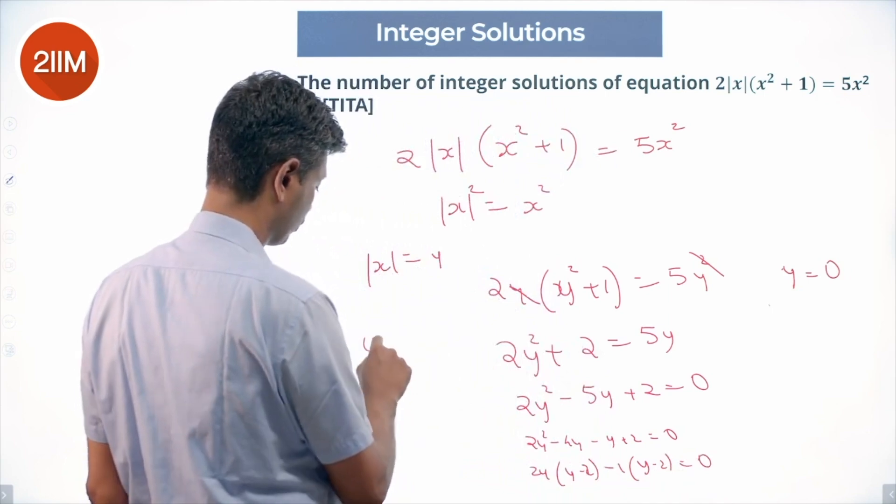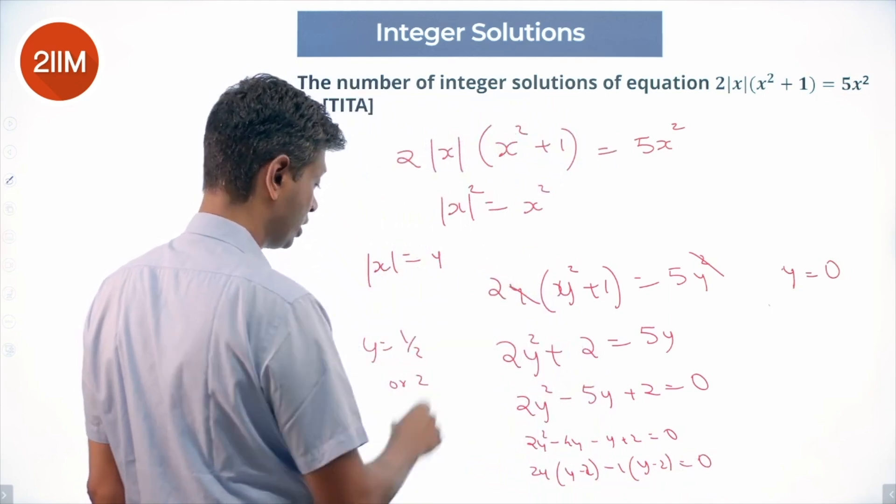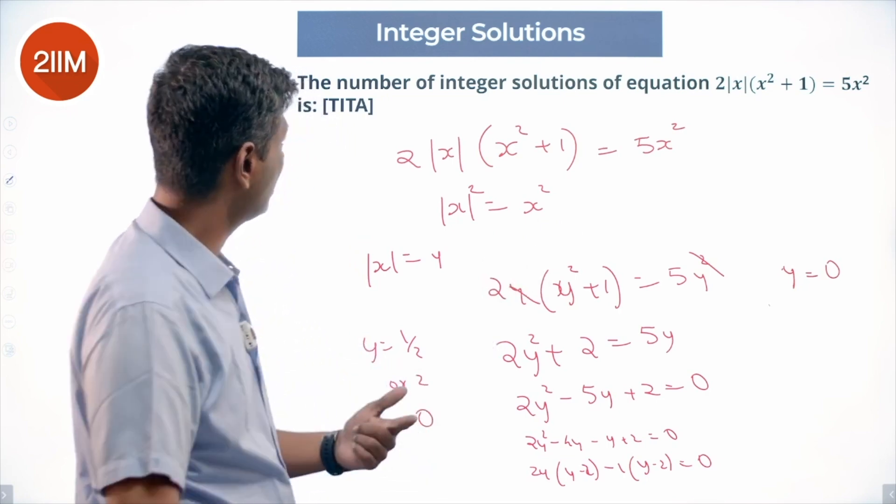So y is half or 2. There is already a 0 that is possible. Zero, half, and 2 work. This is y which is |x|.